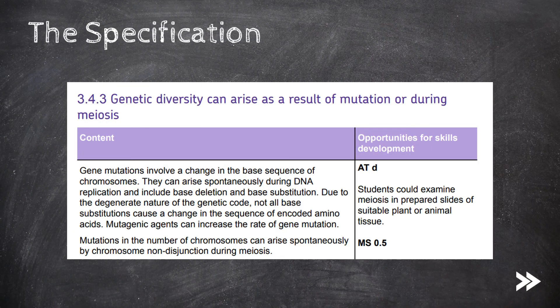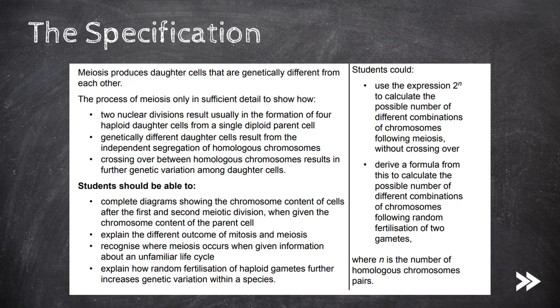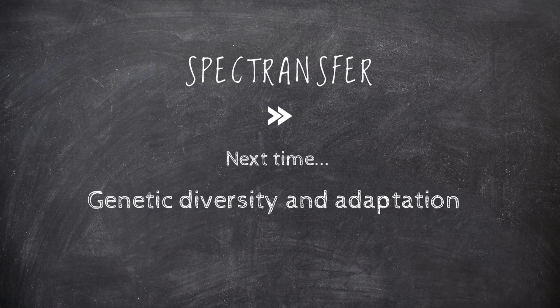So we've covered gene mutations and base deletion and base substitution mutations specifically. We've looked at mutagenic agents and also non-disjunction. We've looked at the mechanisms of meiosis and how independent segregation and crossing over result in genetic variation among daughter cells. That's it for now — thanks for watching. Feel free to comment, subscribe, and add any ideas or suggestions. Next time we'll be looking at genetic diversity and adaptation.